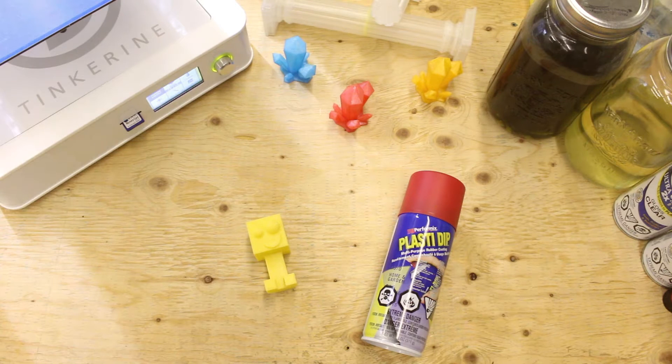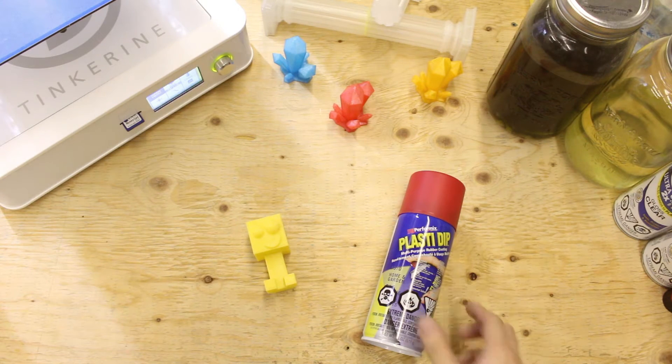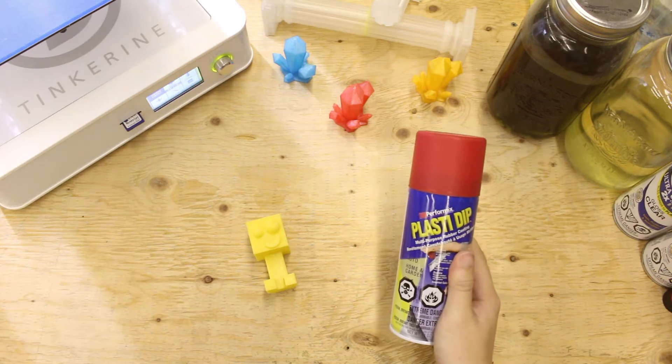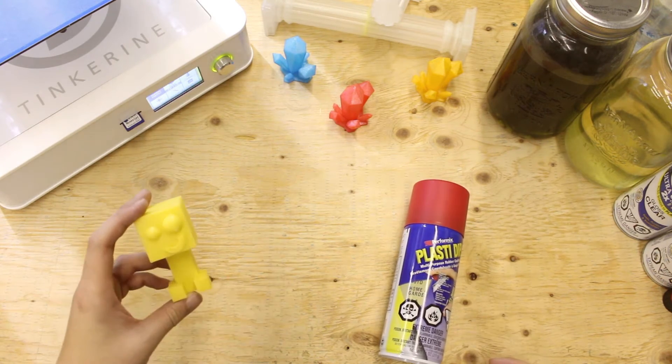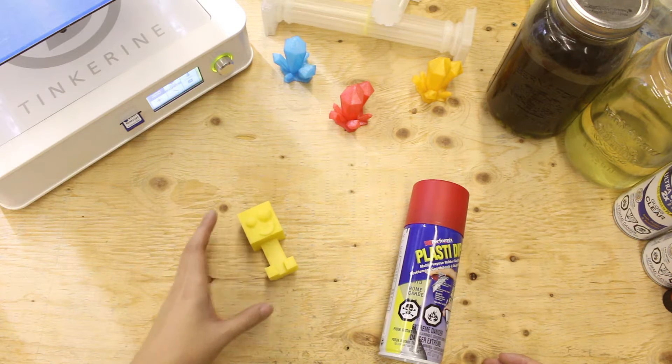Welcome to another episode of Tenkirin Experiments. Today we are going to post-process our PLA model with plastic dip. I found this in the warehouse and was curious whether or not it will be a good material to use to post-process PLA parts.